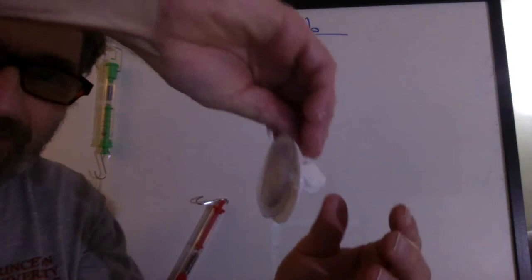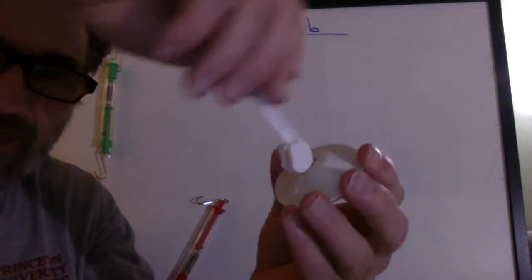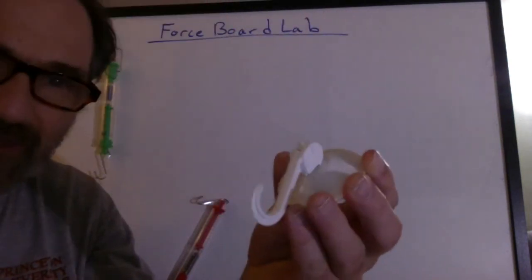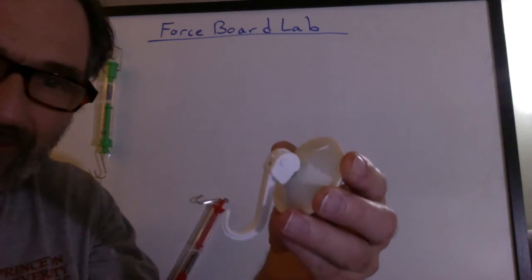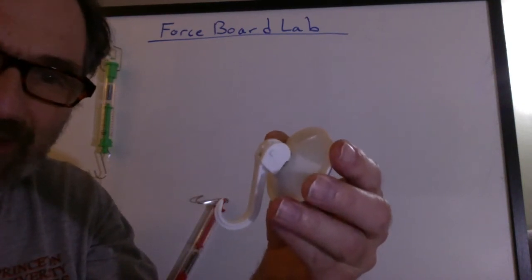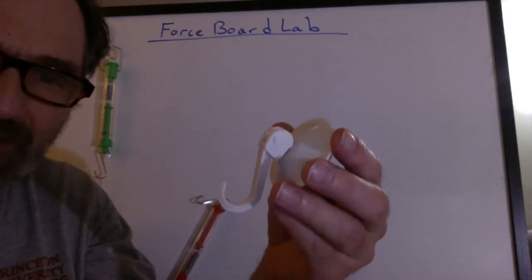This is the suction cup. When you put it on the surface, you snap it into place with this lever and it stays there. As long as the surface is clean and doesn't have any dust and dirt on it, it should hold.